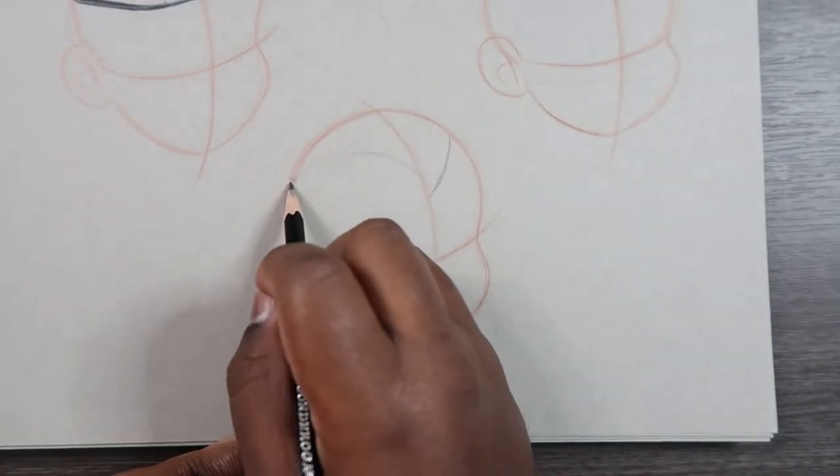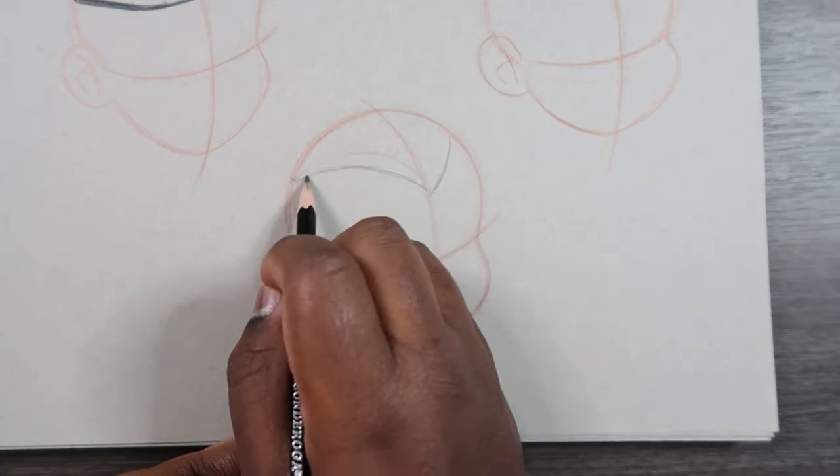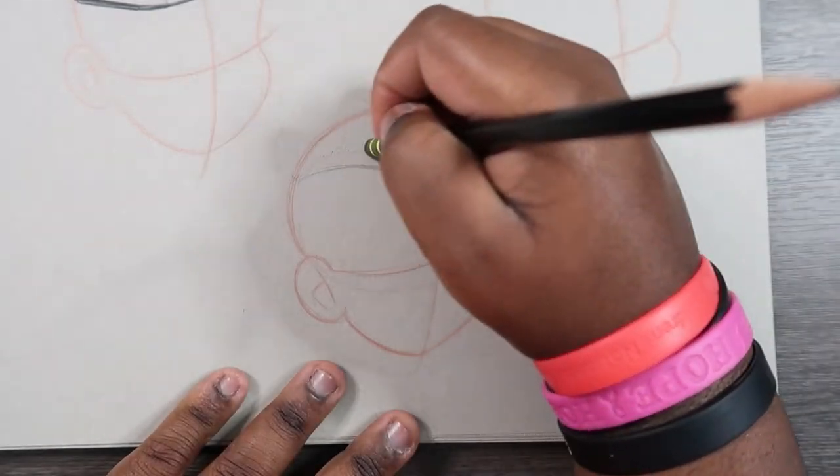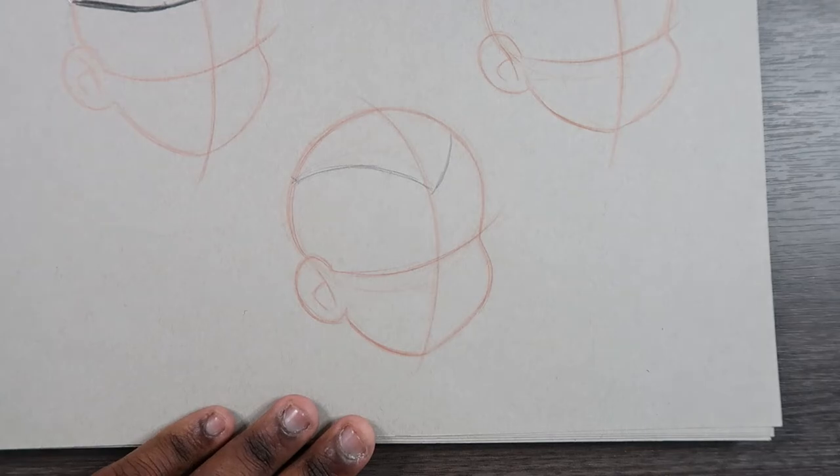So you can erase that other line. And now we're going to make a quadrilateral, a shape with four sides.